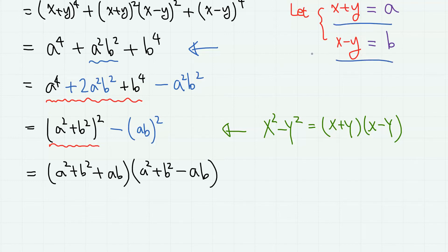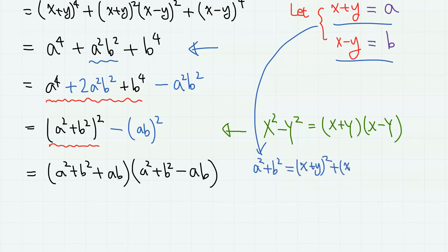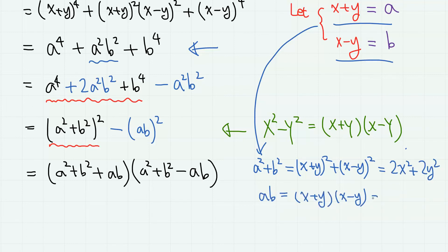Now, from here, a squared plus b squared equals (x plus y) squared plus (x minus y) squared, which is simply 2x squared plus 2y squared, and ab equals x squared minus y squared.